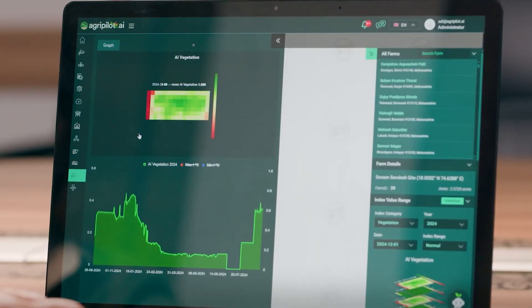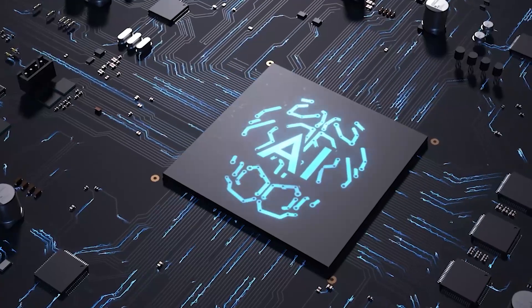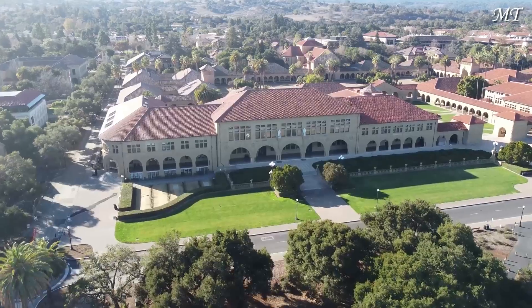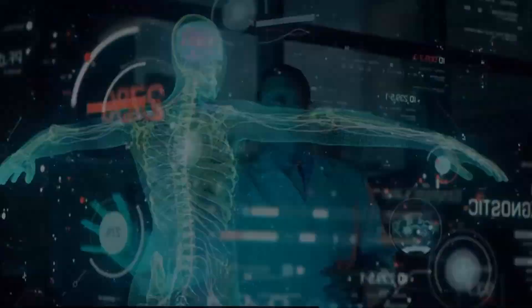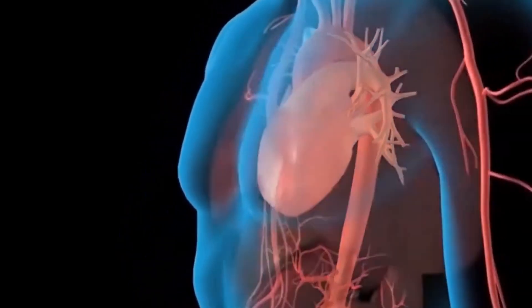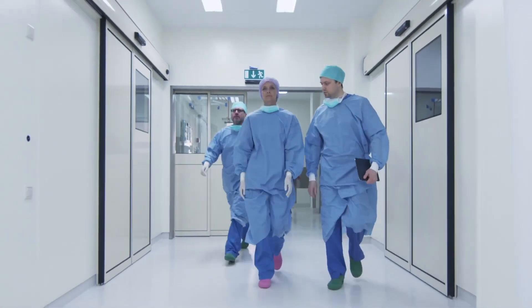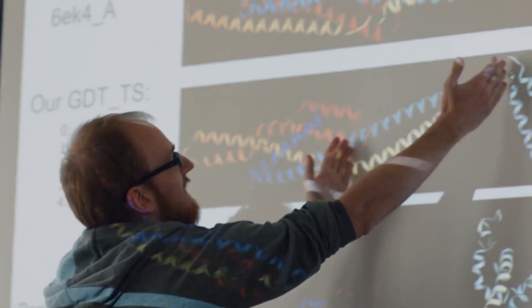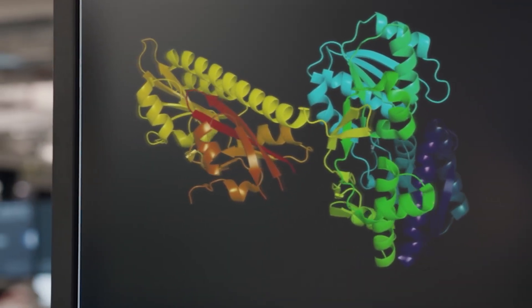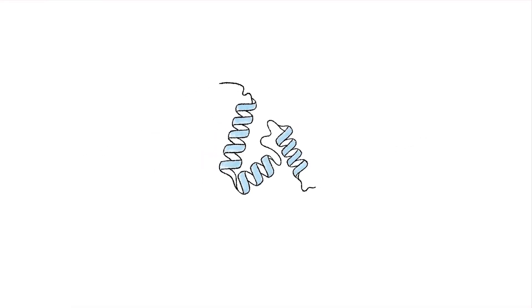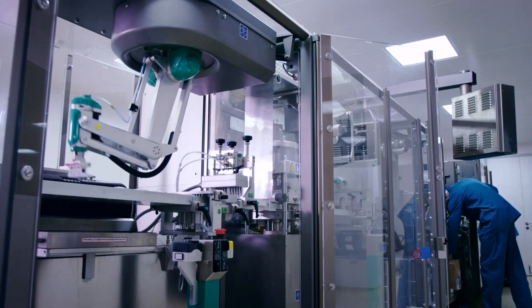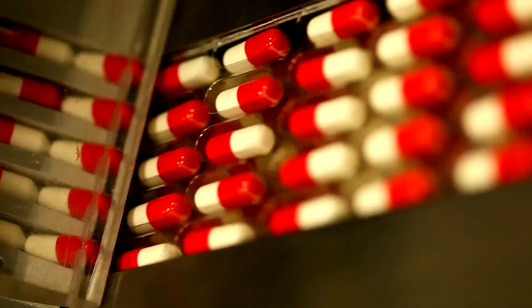But perhaps the most profound transformation is happening in healthcare. At Stanford University, an AI system diagnosed skin cancer more accurately than dermatologists. In Boston, AI algorithms predict heart attacks four hours before they happen, giving doctors precious time to save lives. Here's what most people don't know: in 2020, an AI system called AlphaFold solved a 50-year-old grand challenge in biology, predicting protein structures. This breakthrough is revolutionizing drug discovery. Medicines that once took decades to develop can now be designed in months.